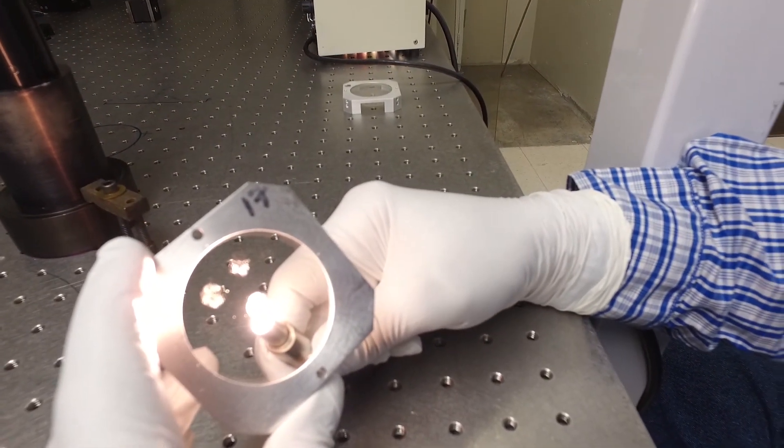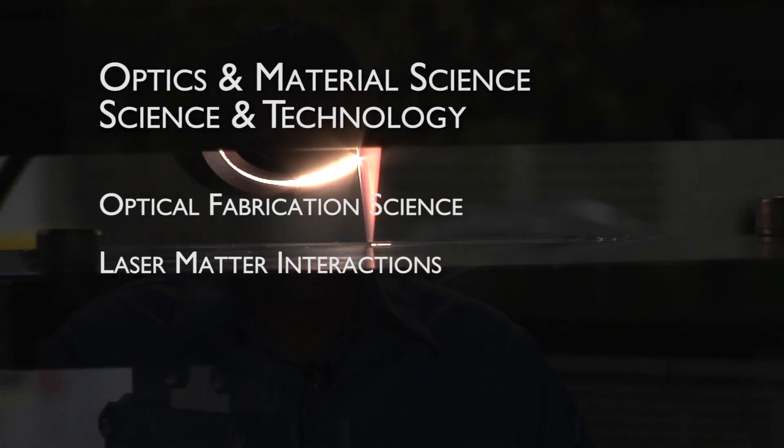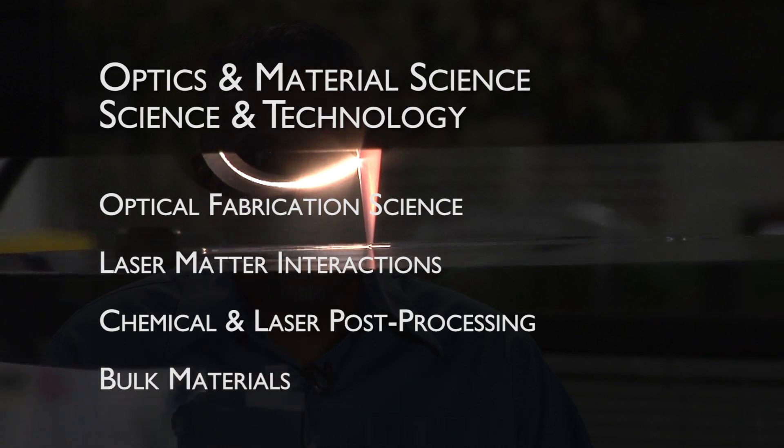Our S&T focuses on four major areas: optical fabrication science, laser-matter interactions with a focus on damage science, chemical and laser post-processing of optics, and finally we also focus on bulk materials and the creation of new materials for use as optics.